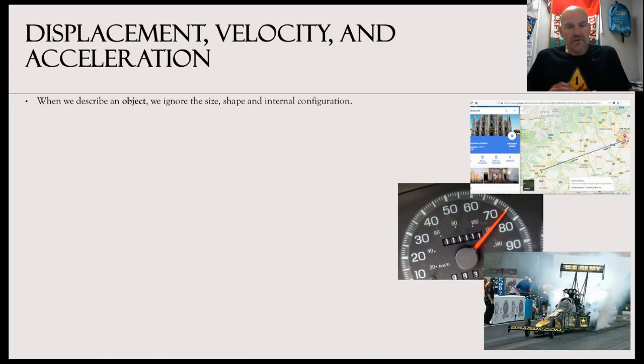The first thing is, what is an object? When we describe an object, we're going to ignore everything about it, like the size, the shape, internal configuration. We're just going to treat it as one single thing. So we talk about like a car traveling at 50 miles per hour, we're not going to look at the tires, the person, the seats. It's just going to be one giant car.